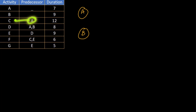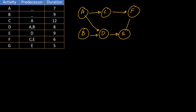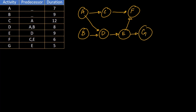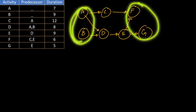After the completion of A, C starts. After the completion of both A and B, D starts. E starts with the completion of D. F starts after the completion of C and E. G is the final activity of the project and starts after the completion of E. So A and B are the two starting activities, and F and G are the ending activities of the project.